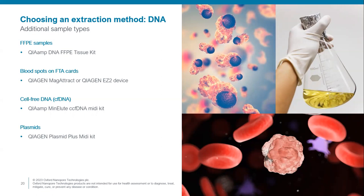Some samples require specific kits — for instance FFPE samples, cell-free DNA, and plasmids. For blood spots on FTA cards, we've validated the QIAGEN EasyDNA device, though these samples can also be extracted with other kits like the MagAttract kit.